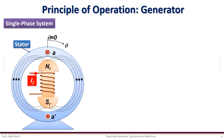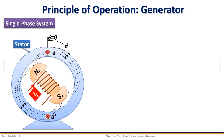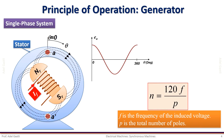To explain the principle of operation of a synchronous generator, we can consider a simple single-phase machine as shown in this figure. When a DC feed current flows through the rotor field winding, it establishes a flux in the air gap. If the rotor is now rotated by a prime mover, a revolving field is produced in the air gap. The rotating flux will link the armature windings AA' and will induce a voltage in the stator winding. The rotor speed and the frequency of the induced voltage are related by this equation.